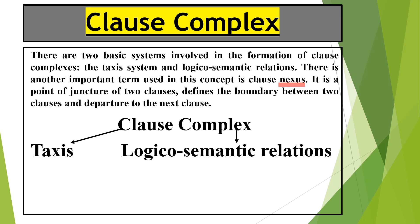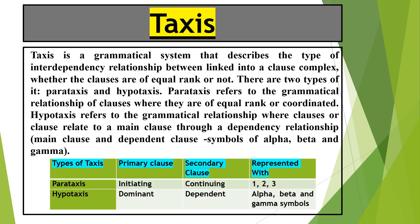In other words, you can picture clause complex: we divide it into taxis, and further we divide into different types. We also take logico-semantic relations in which you have projection, etc. Taxis is a grammatical system that describes the type of interdependency relationship between linked clauses — whether the clauses are of equal rank or not.